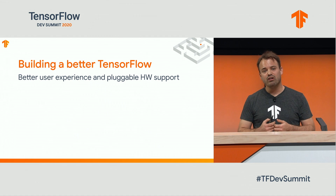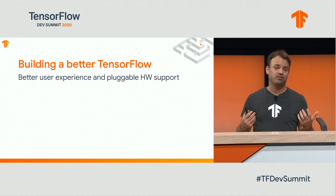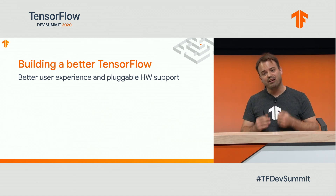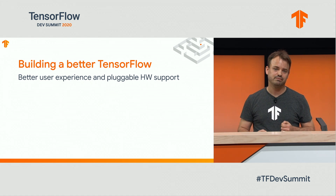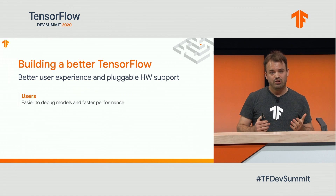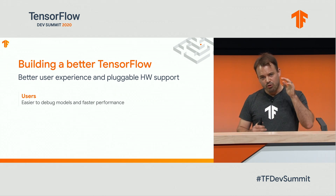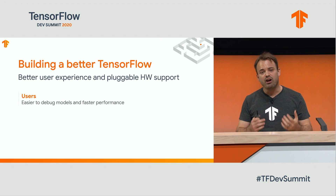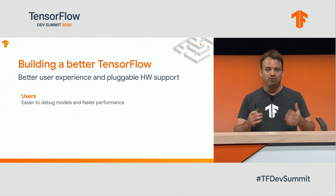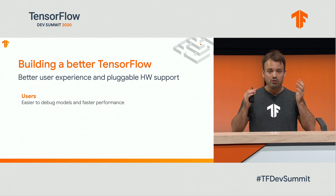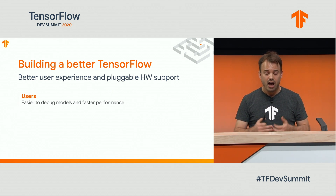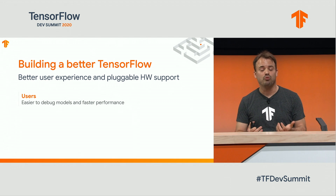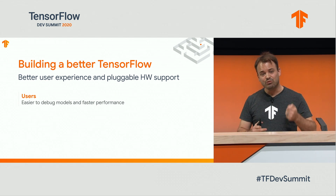So with MLIR, what do we want to use it for in TensorFlow? We want to build a better TensorFlow — better user experience as well as better pluggable hardware support. If you're a user, we want to make it easier for you to debug your model, make optimizations transparent and see what's going on. If you have an error message on your optimized model, we want to be able to track it back to your original source location, and MLIR's location tracking enables this. Of course, we also want faster performance — going from writing a model to getting good performance on your hardware is essential.